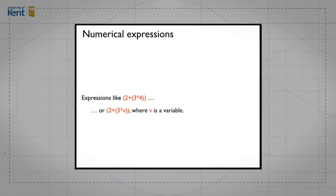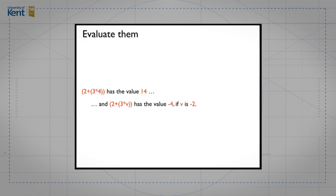So in all those applications you have to process languages, as well as in writing a good old-fashioned compiler. What we're going to do here is take an example — admittedly a small example — of a language and show how we process it. The language we're going to look at is a language of numerical expressions: expressions like two plus three times four, written here with parentheses so we understand what gets multiplied and what gets added, or expressions like two plus three times v, where v is a variable.